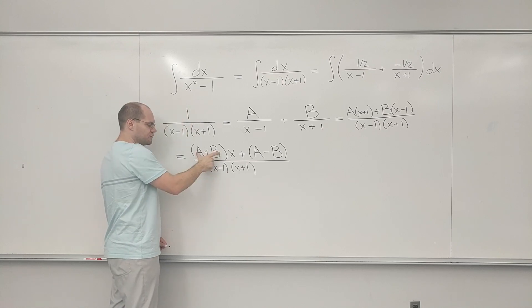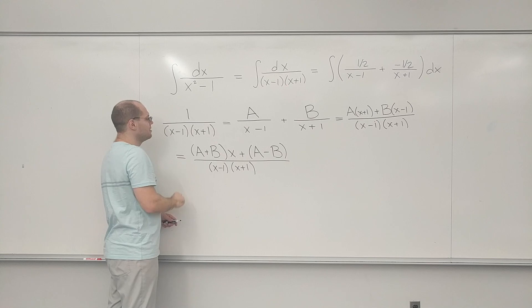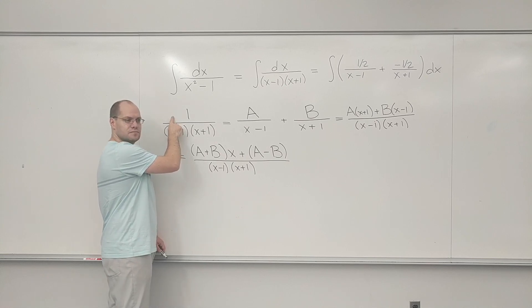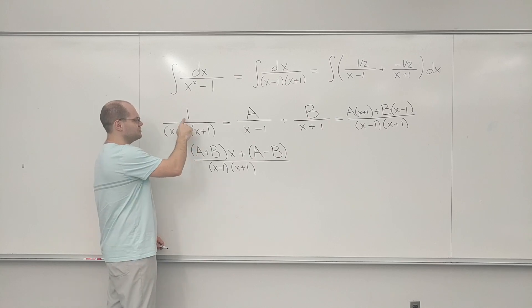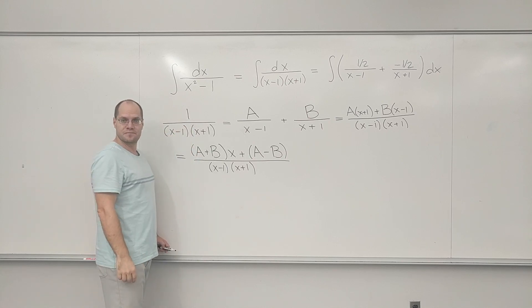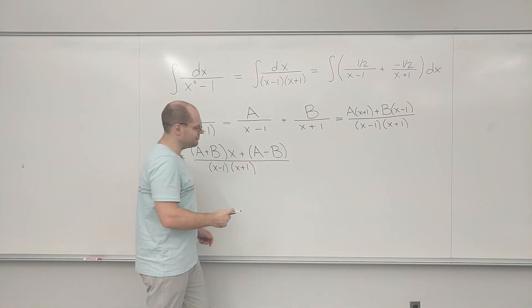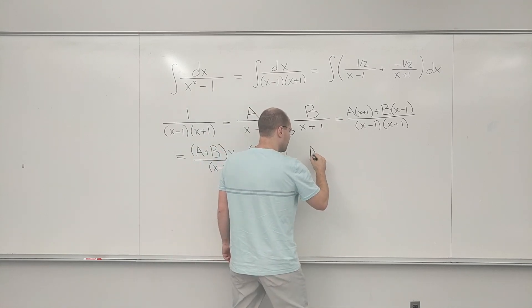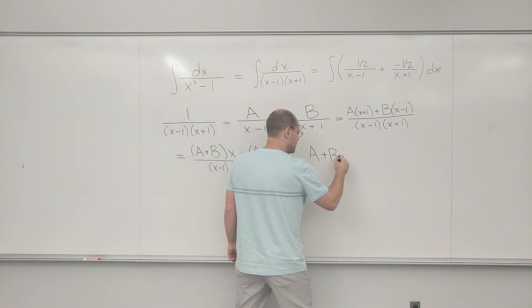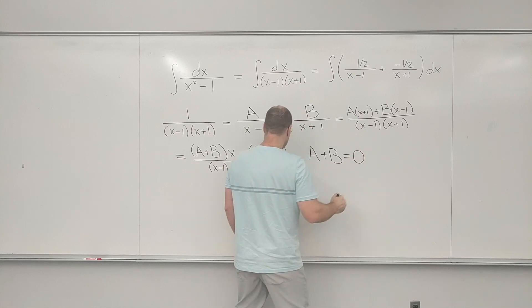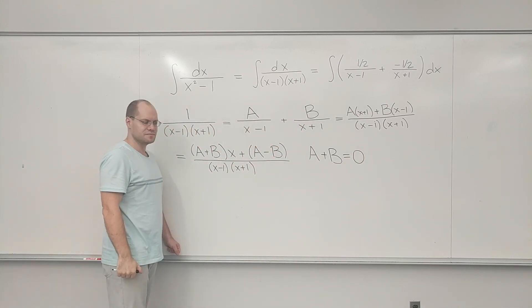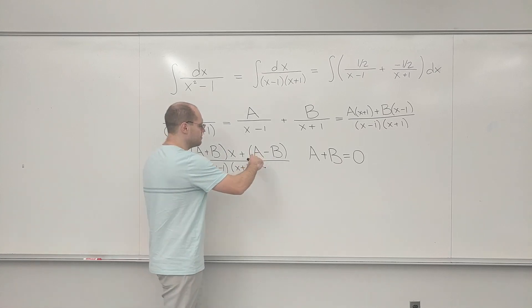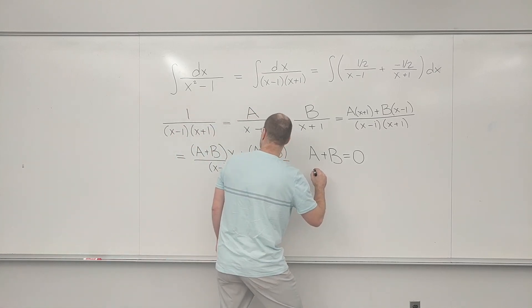We have to match it up with a polynomial that only has a free coefficient and it equals one. So a plus b, the coefficient that multiplies x must be zero and a minus b, which is the free coefficient, the constant coefficient, must be one. So we're ending up with two equations for a and b where a plus b equals zero and a minus b equals one.